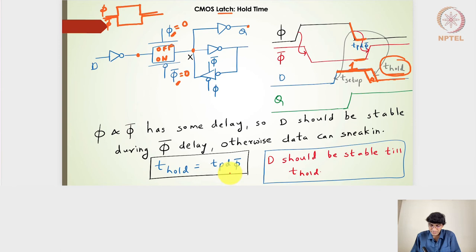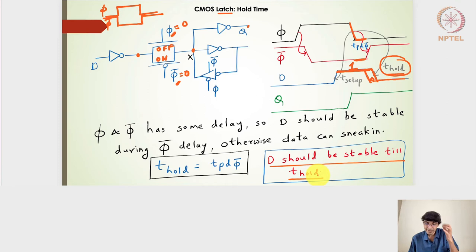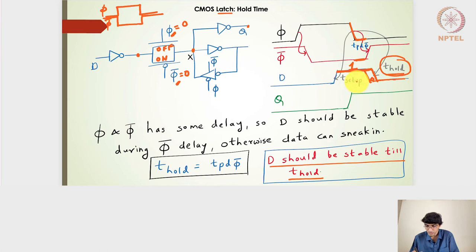So the t_hold is defined as the propagation delay for the clock-bar signal. D should be stable for t_hold time after the clock edge. In fact, the D input should be retained for t_setup plus t_hold total time to get a proper expected output at the latch output. It should be stable for t_setup before the falling clock edge and t_hold after the falling clock edge.